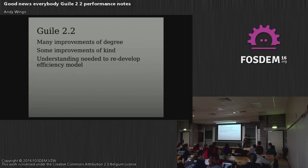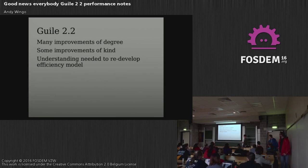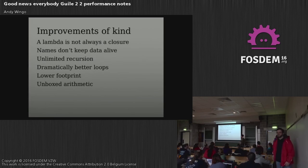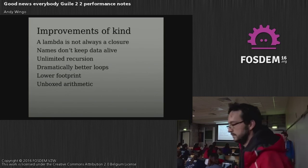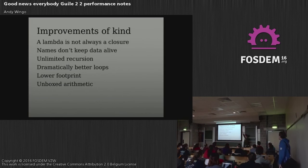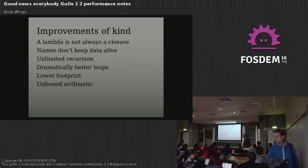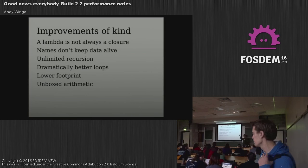There are many improvements of degree, but the ones I'm going to focus on are improvements of kind — improvements such that you might consider writing or understanding your program in a different way once you know these bits. Here they are: first, lambda is not always a closure. Names don't keep data alive. We can do unlimited recursion. Guile does dramatically better loop compilation. It has a lower footprint, and it does unboxed arithmetic.